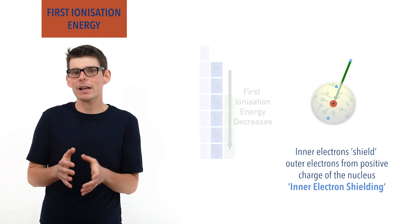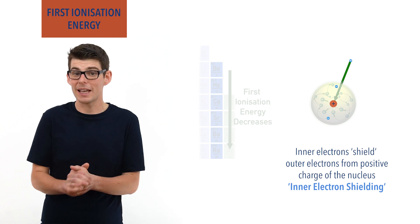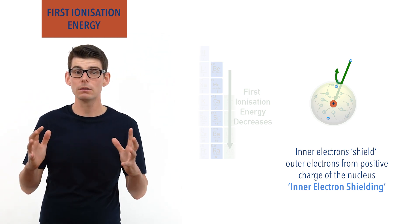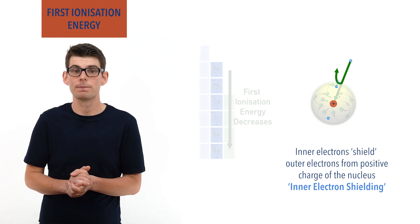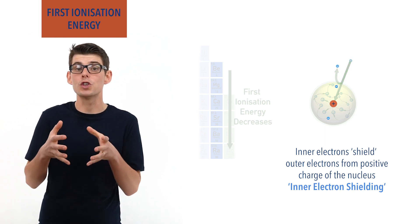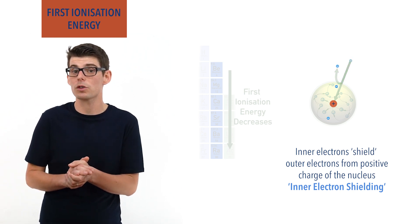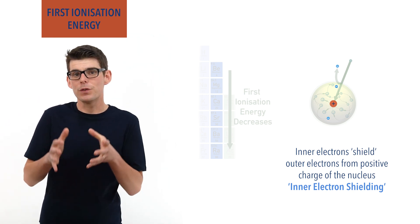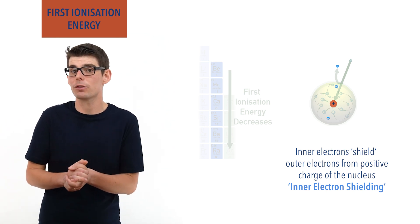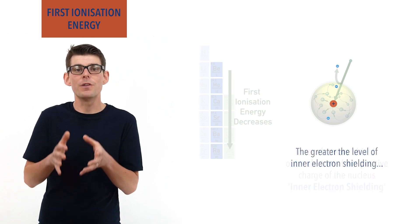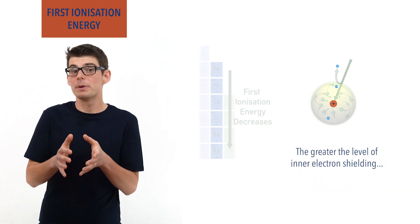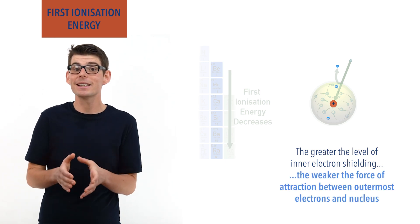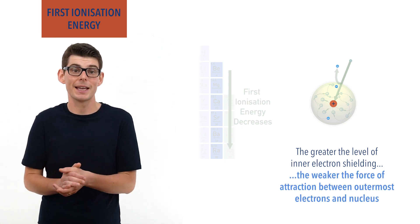As outer electrons get attracted to the nucleus and are pulled in tighter towards it, they start to get repelled by inner electrons. This repulsion reduces the overall attraction force between the outer electrons and the nucleus. The greater the level of inner electron shielding within an atom, the weaker the force of attraction between the outer electrons and the nucleus, making it easier to remove an electron from the atom.